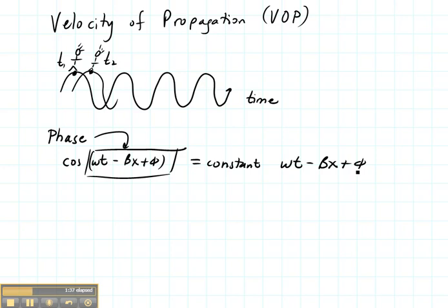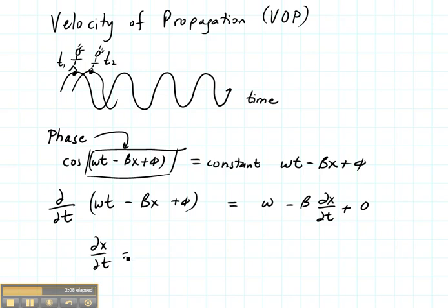And the way I do that is I take the time derivative. So I'm going to take d by dt of my phase omega t minus beta x plus phi. And what that's going to give me is omega, that's this first derivative, minus beta derivative of x with respect to time plus zero. Because the derivative with respect to time of phi is zero. And that leaves me with dx by dt is omega divided by beta.